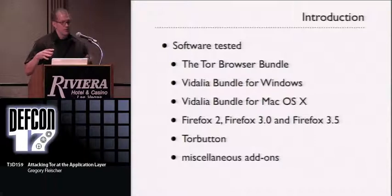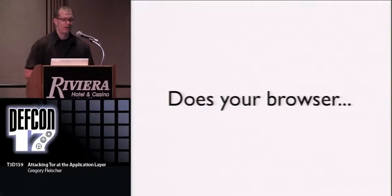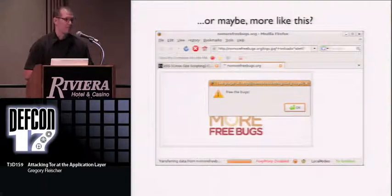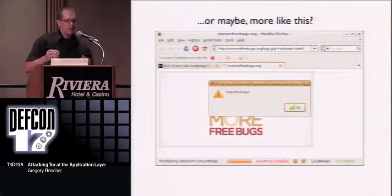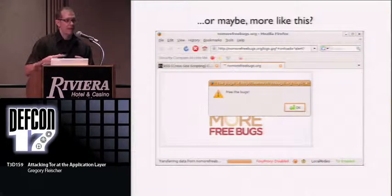Here's the software I used: the Tor Browser Bundle, the Vidalia bundle for Windows, the Vidalia bundle for OS X, Firefox 2, Firefox 3, and Google Chrome 5, as well as Tor Button and other related tools. Does your browser look like this? You have the Google toolbar, NoScript, and Tor Button. Or maybe it looks like this — you have security testing add-ons installed, like Local Rodeo and Burp Proxy and other stuff that remote sites can detect.